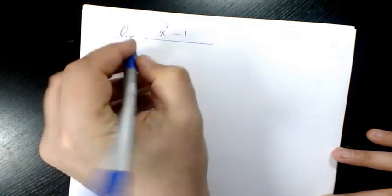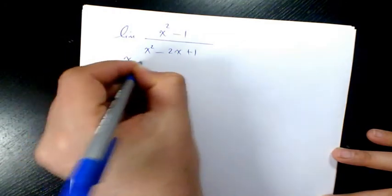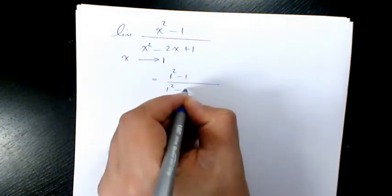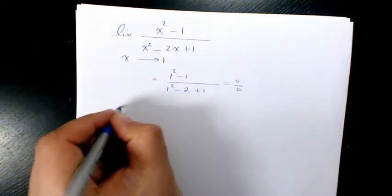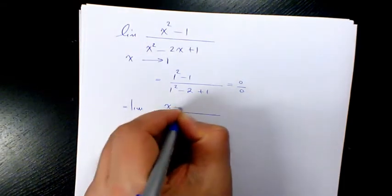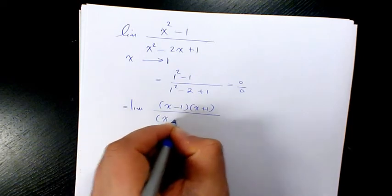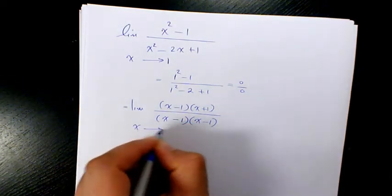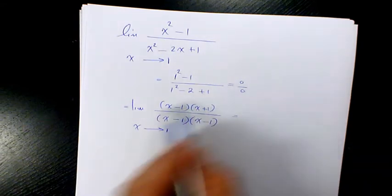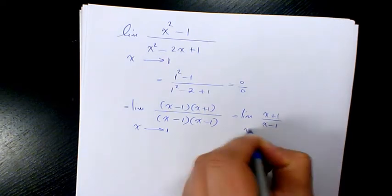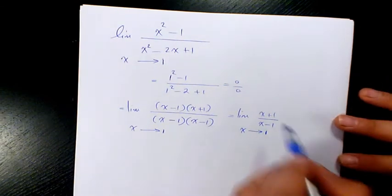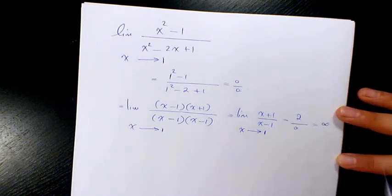Next example: the limit of (x squared minus 1) over (x squared minus 2x plus 1) when x is approaching 1. Substituting gives 0 over 0. Factoring gives (x minus 1)(x plus 1) over (x minus 1) squared. Canceling one (x minus 1) gives (x plus 1) over (x minus 1). As x approaches 1, this gives 2 over 0, which is infinity.